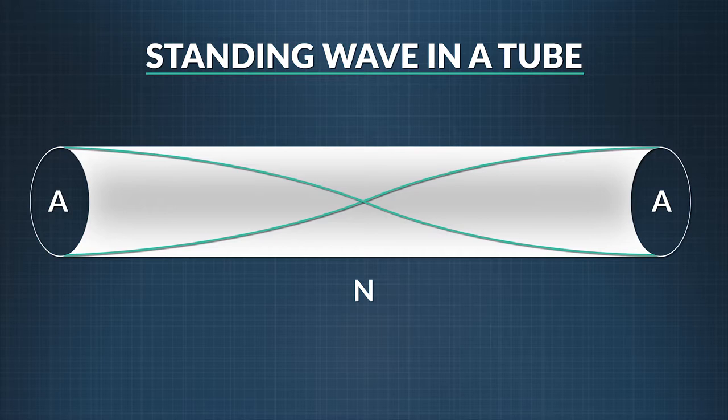Like the stringed instruments, the fundamental wavelength, or lambda sub 1, equals two times the length of the tube, L.